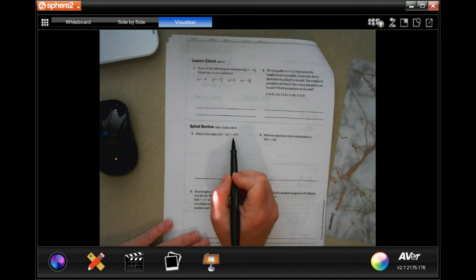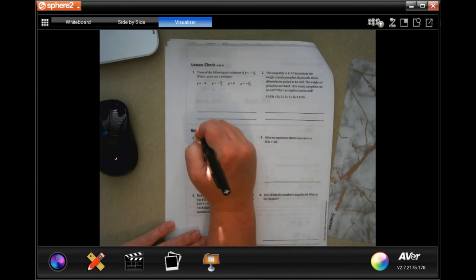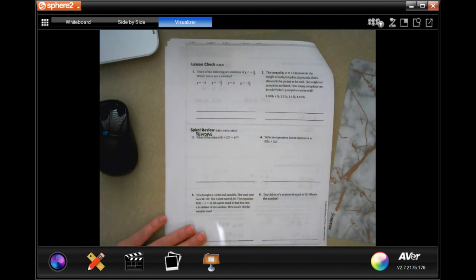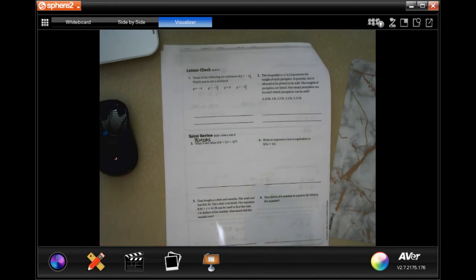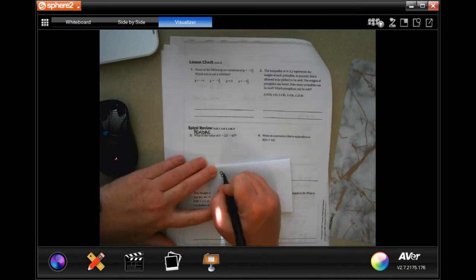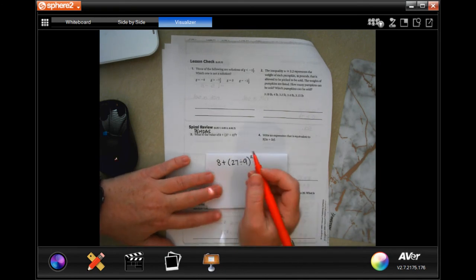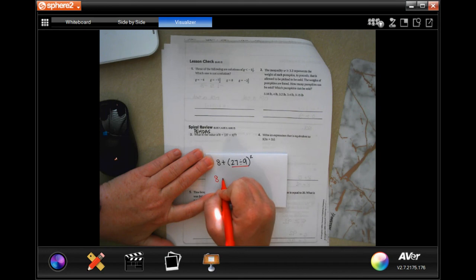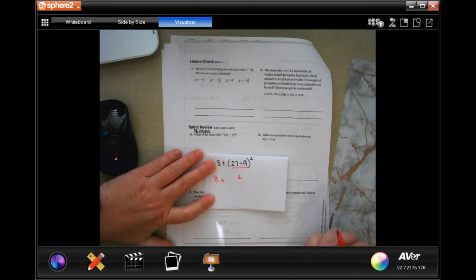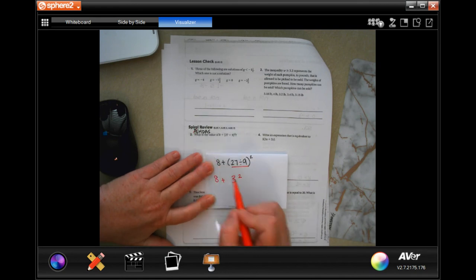Before we deal with the addition, we have to deal with parentheses. We're going to rewrite our problem right here. I have to deal with this first, which means that I still have to keep the rest of it. Well, 9 goes into 27 three times. So now, I took care of my parentheses, I have an exponent down. Well, my 8 doesn't go anywhere just because my exponent's there, so 3 squared, or 3 times 3, is 9. Now, I'm just left with addition and subtraction, and 8 plus 9 is 17.